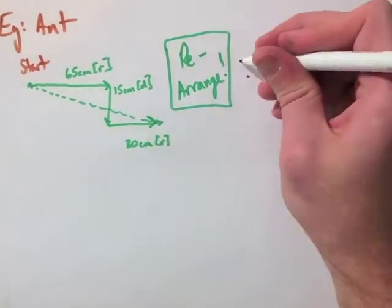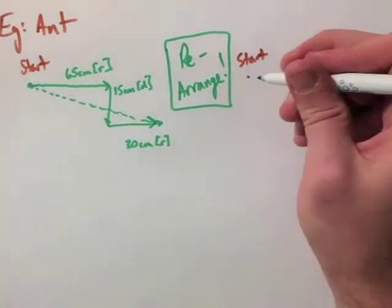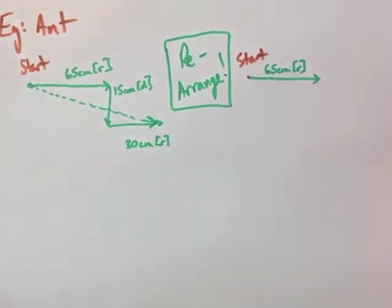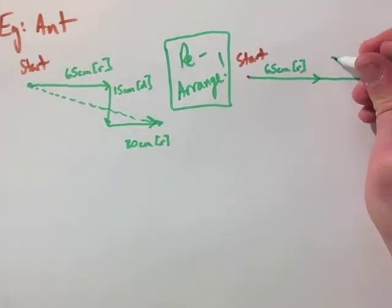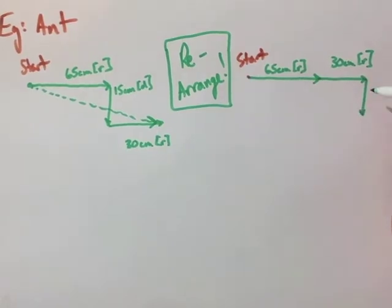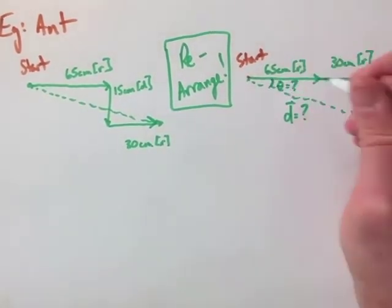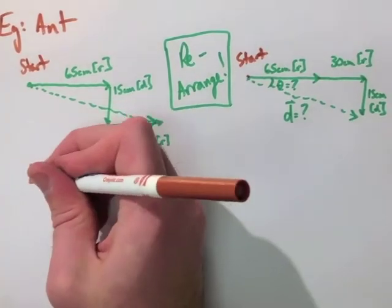So we're going to move the 30 centimeters up beside the 65. So we have 65 to the right, and then we have another 30 to the right. We're doing this tip to tail, and then we go down our 15 centimeters. Now our final displacement is the same as what it was before, but it's easier to find. We can again use Pythagorean theorem to find the length.